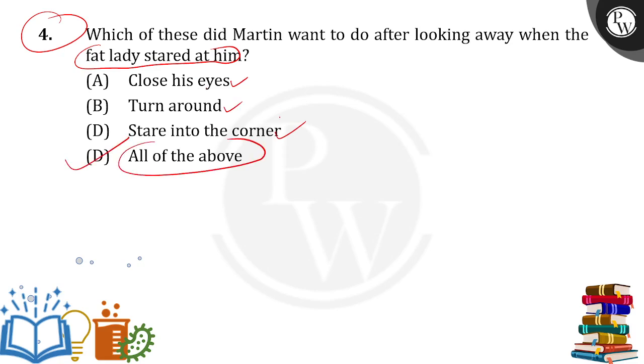Basically, he was doing everything to avoid any kind of interaction with her. He was trying to avoid the lady by closing his eyes, he turned around and he was staring into the corner. D — all of the above — is the correct answer.